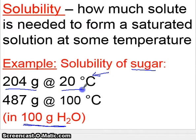So you'll notice that sugar at 20 degrees Celsius is much less soluble than sugar at 100 degrees Celsius. You can dissolve about two and a half times more sugar at 100 degrees Celsius. So this is what we mean by solubility, how much it takes to form a saturated solution at some temperature.